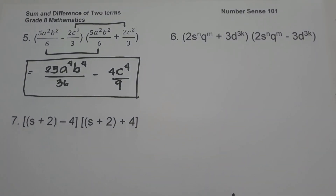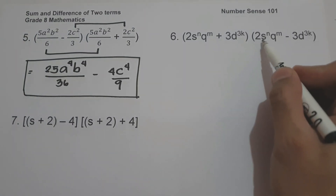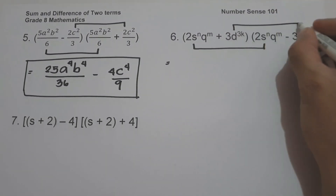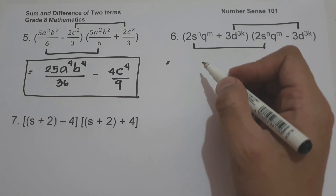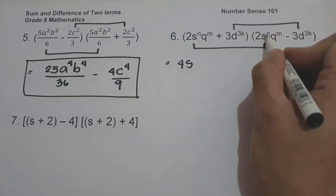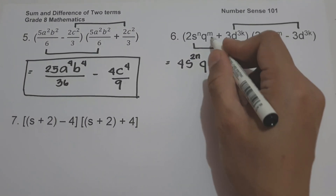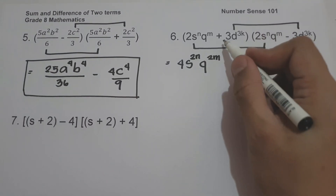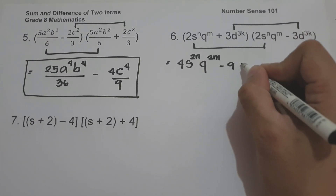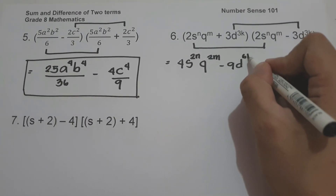On example number six we have quantity two s raised to n times q raised to m plus three d raised to three k, times the quantity two s raised to n times q raised to m minus three d raised to three k. Multiply first term to first term: two times two is four, and adding exponents gives s to the two n and q to the two m. Then positive three d raised to three k times negative three d raised to three k is negative nine d raised to six k. That is our answer.